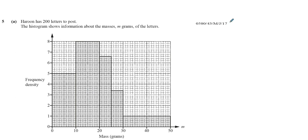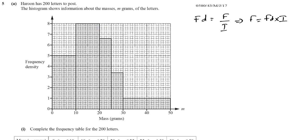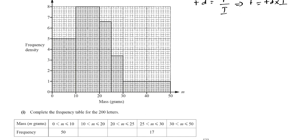If you want to do it in a more formal way, we know that the frequency density is equal to the frequency divided by the interval. So therefore, if we rearrange that, frequency is equal to frequency density times the interval, which is the area of the bar. The frequency density is the height, and the interval is the width of each bar. So all we need to do is find the area of each of these bars and fill in this table.